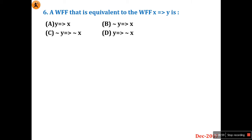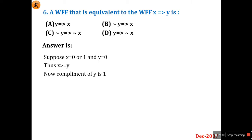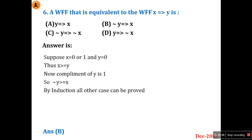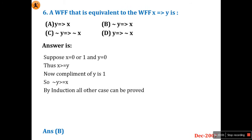Question number six: a well-formed formula equivalent to x → y is which option? Suppose x = 0 or 1 and y = 0. Then x ≥ 0 — it may be zero or one. The complement of y is 1 since y is 0, so complement of y is greater than or equal to x. This is true for all cases, so option B is the right answer: ¬y → ¬x, which is the contrapositive of x → y.